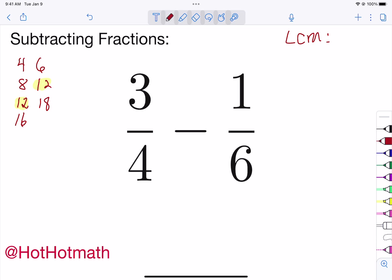Now there's another way to find it. If you have four, that's two times two, and you have six, that's three times two. They already have a two in common, but this one has an extra two and this one has an extra three.